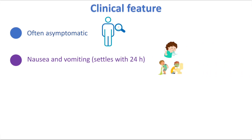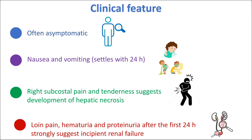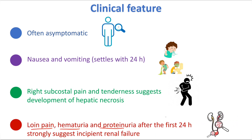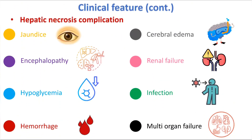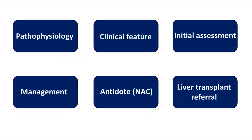Coming to clinical features: in the first day it is often asymptomatic, though some patients may get nausea and vomiting, which usually settles within 24 hours. Right subcostal pain and tenderness may suggest development of hepatic necrosis. Loin pain, hematuria, and proteinuria after the first 24 hours usually indicate incipient renal failure. Complications of hepatic necrosis — jaundice, cerebral edema, hepatic encephalopathy, renal failure, hypoglycemia, infections, hemorrhage, and multi-organ failure — typically occur three to four days after onset.